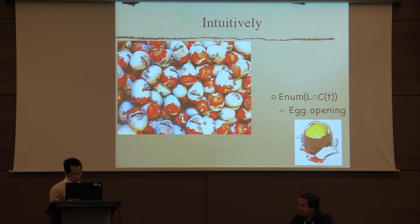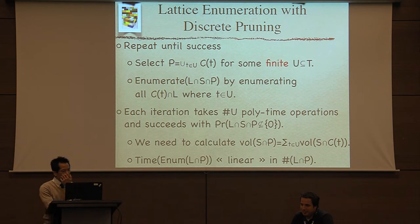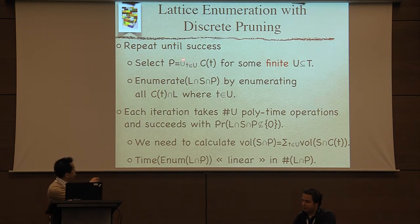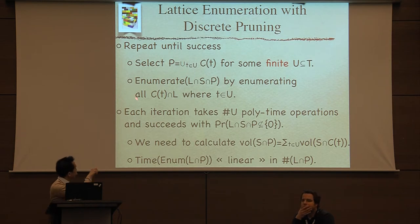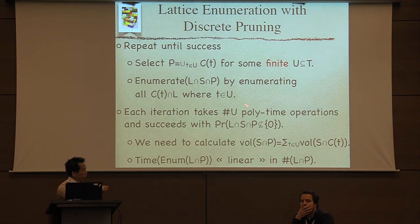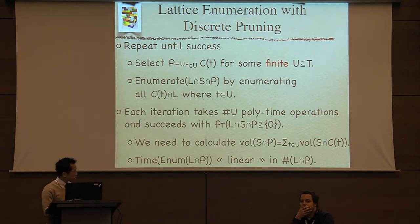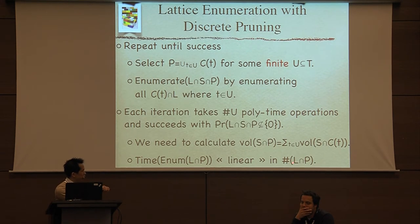For discrete pruning, the algorithm is simple: you have this partition, take a finite number of cells, iterate each cell, and filter those inside the ball. The running time of one pass is just the number of tags, up to a polynomial-time unit. Each iteration succeeds with the corresponding probability. To estimate this probability, I just need to compute the volume of the cell's intersection with the ball. Because I took a partition, the total volume is a sum of individual volumes since they are disjoint. Notice that the running time of the enumeration is now linear in the number of points — in some sense, it's optimal.